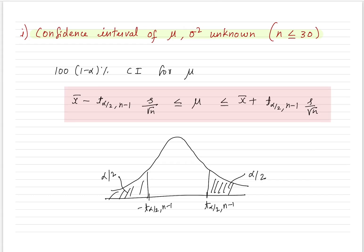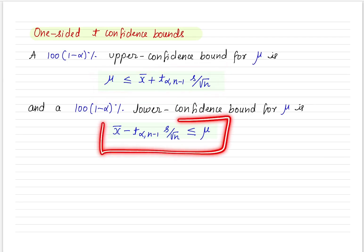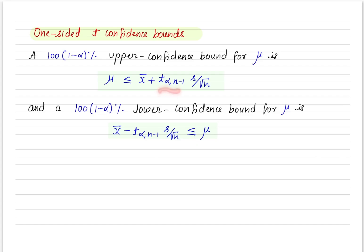Remember: whenever variance is unknown and sample size is small, we use the t distribution. If sample size is very large, we can replace the t value by the z value. Before that, let me also define the one-sided t confidence bounds. The 1 minus alpha percentage upper confidence bound for the mean, and the lower confidence bound, are defined using t-alpha instead of t(alpha/2), which leaves an area alpha to the right.